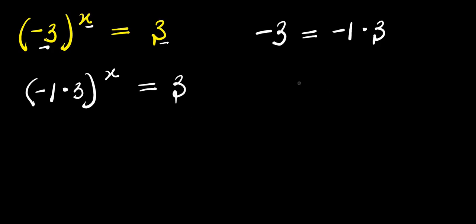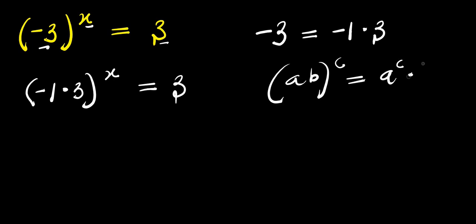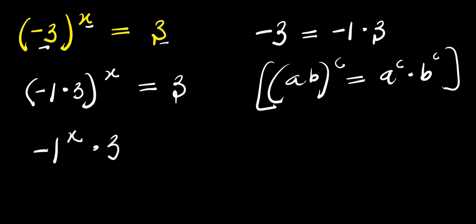Now if you have a times b raised to the power of c, this equals a to the power c times b to the power c. Applying that rule, I will have negative 1 to the power x times 3 to the power x equals 3.